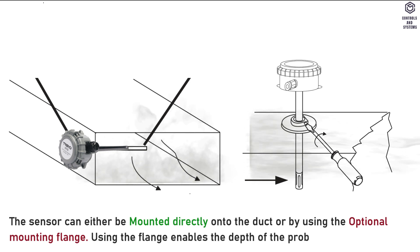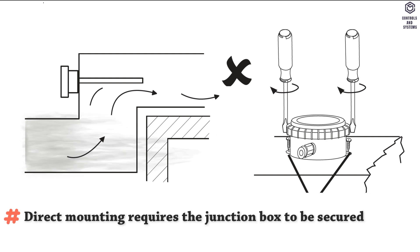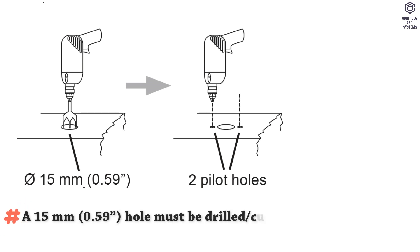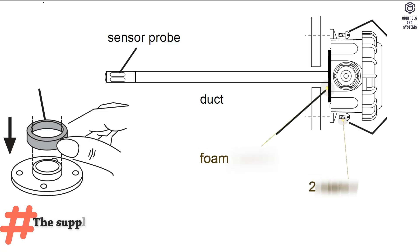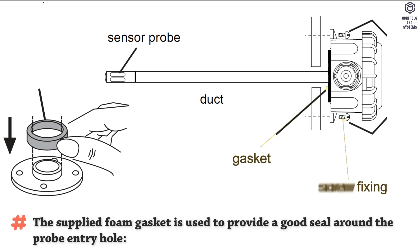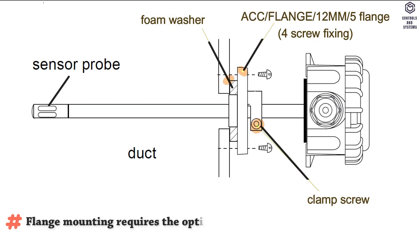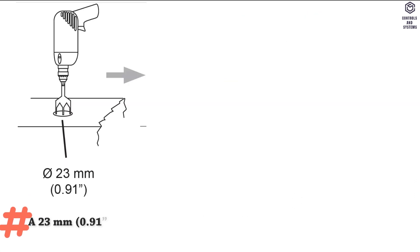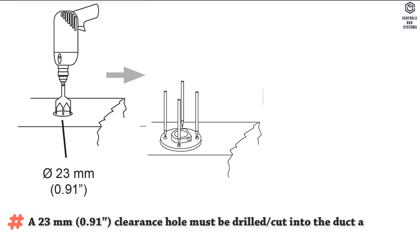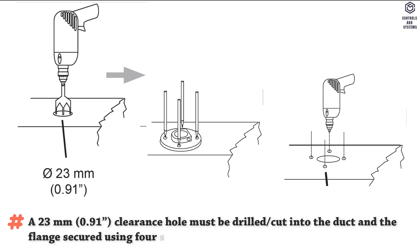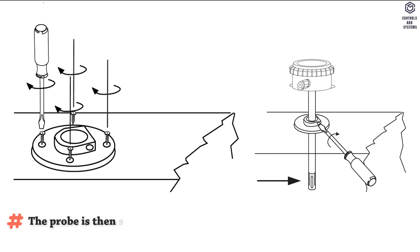Using the flange enables the depth of the probe to be adjusted. Direct mounting requires the junction box to be secured using two number six screws. A 15 mm hole must be drilled into the duct for the probe. The supplied foam gasket is used to provide a good seal around the probe entry hole. For example, flange mounting requires the optional ACC flange 12-5 flange to be fitted. A 23 mm clearance hole must be drilled or cut into the duct and the flange secured using four screws. The probe is then secured at the required depth by tightening the clamp screw.